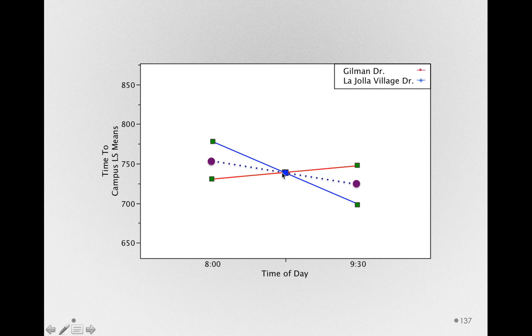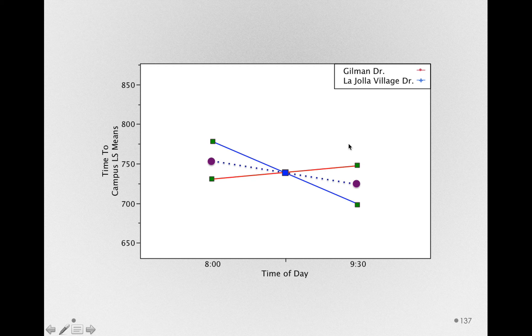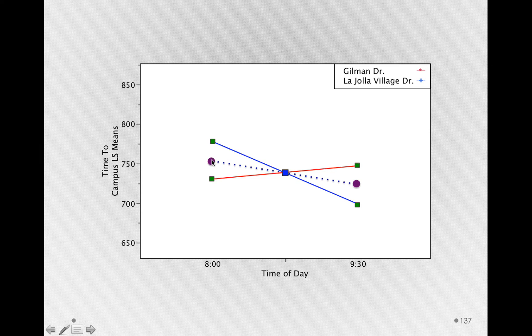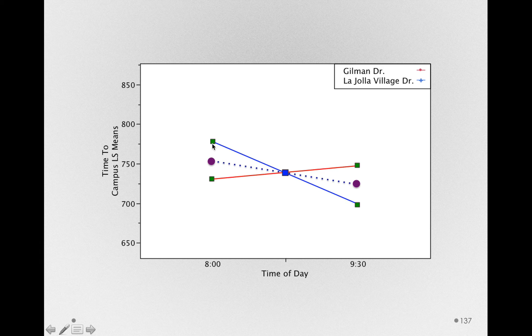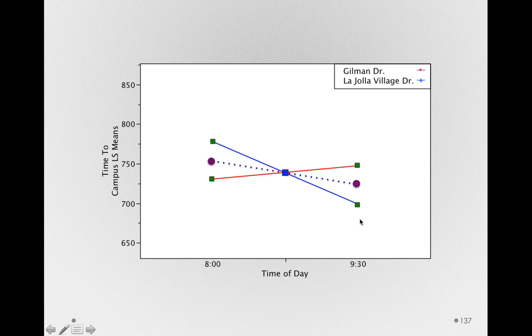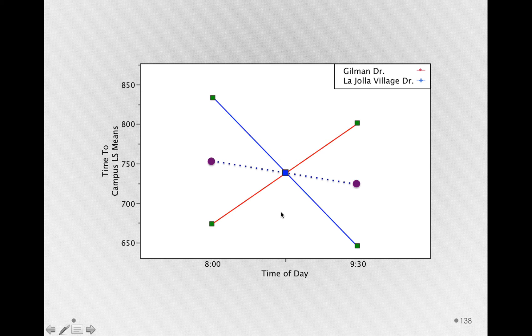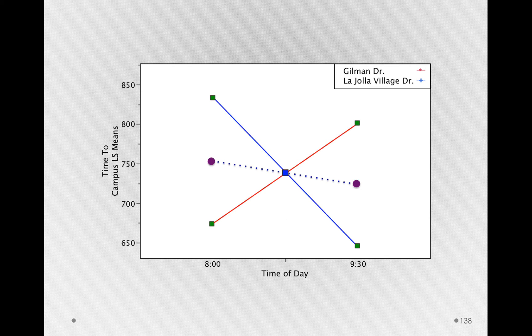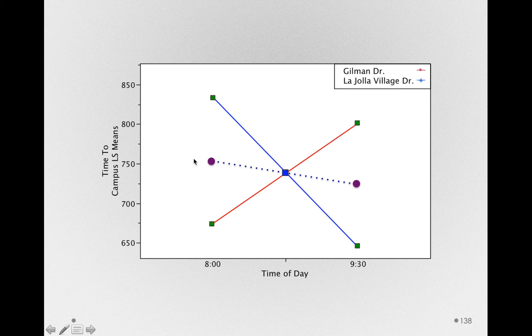Well, in order to keep the grand mean the same, we're going to have to have some other group mean that actually takes more time. And in order to keep the average at 8am where it is, we're definitely going to have to move La Jolla Village Drive. And if we move La Jolla Village Drive at 8am to be higher, then we're certainly going to have to move it at 9:30am to be lower to keep the overall average the same. So we could do this, and these would be the means we could find. That will still keep the grand mean where it is, and the overall mean for 8am and 9:30am to be where it is.